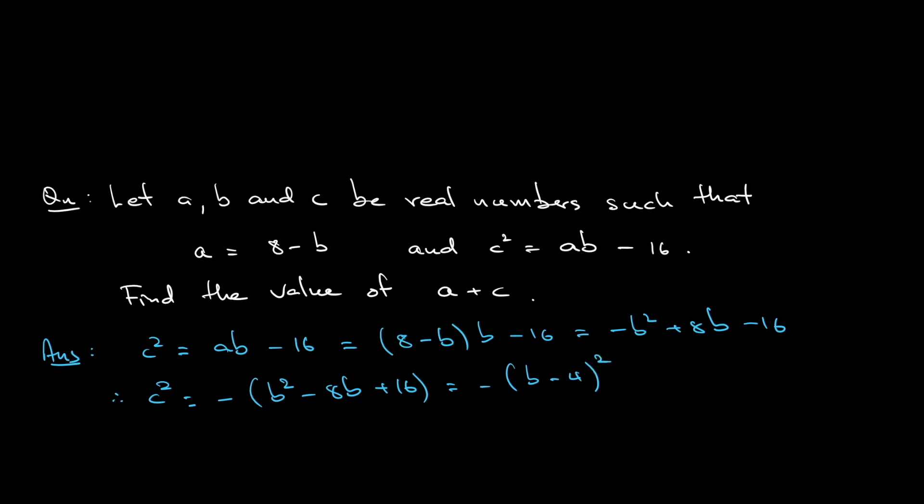Shift everything to the left-hand side. You have c square plus b minus 4 square is equal to 0. Two variables, one equation. But here you have square plus another square is equal to 0. We use the fact that the sum of two non-negative numbers is 0 only when both numbers are 0.